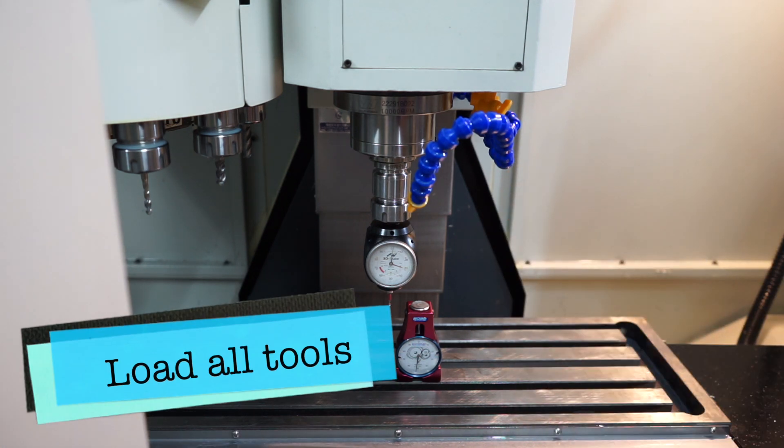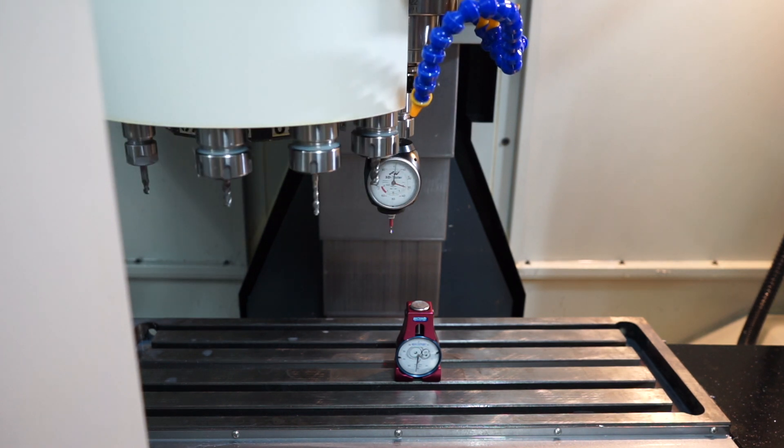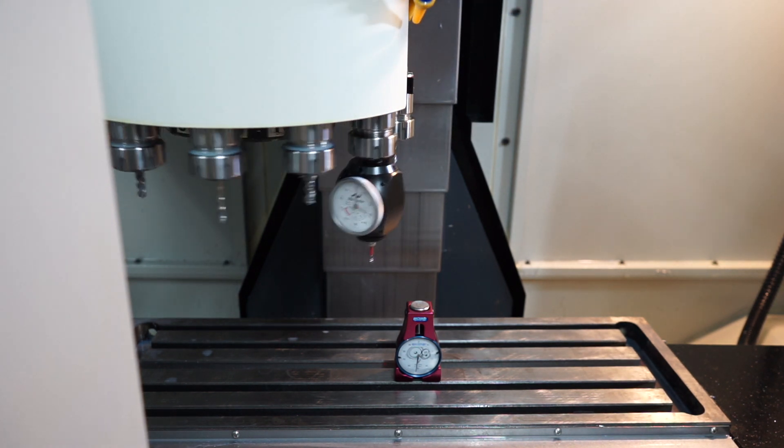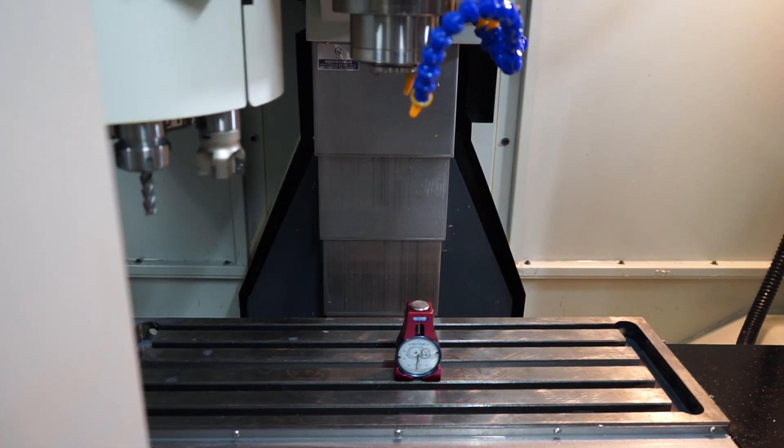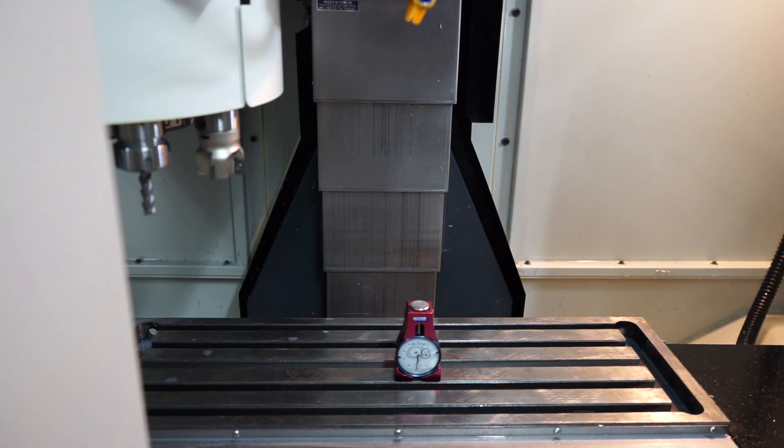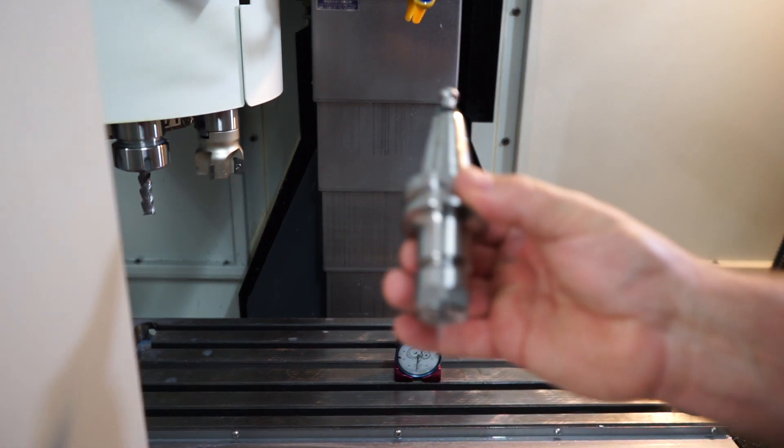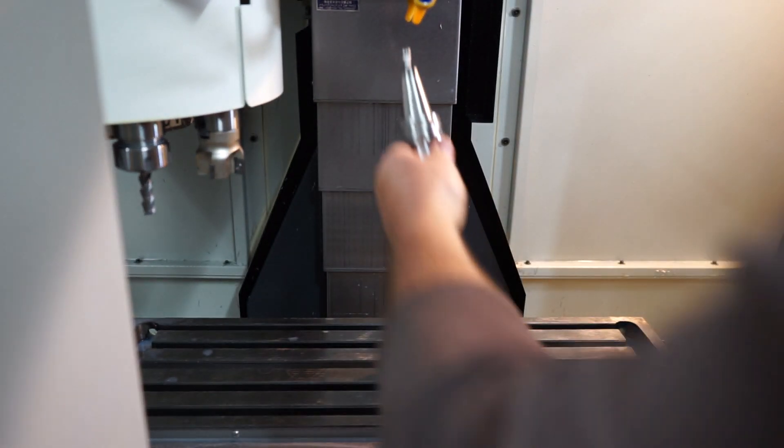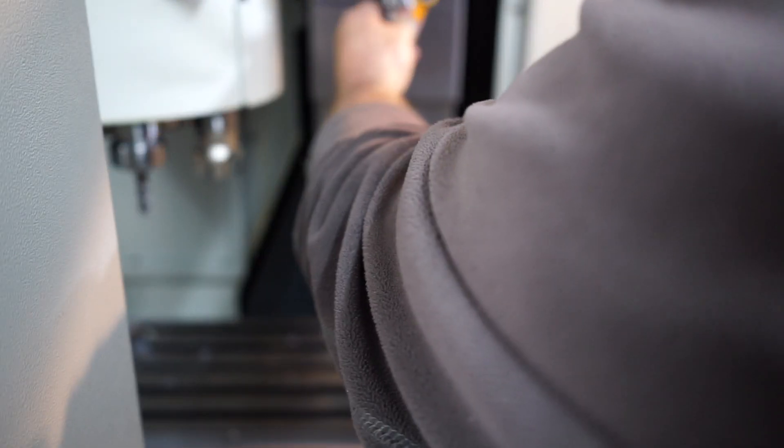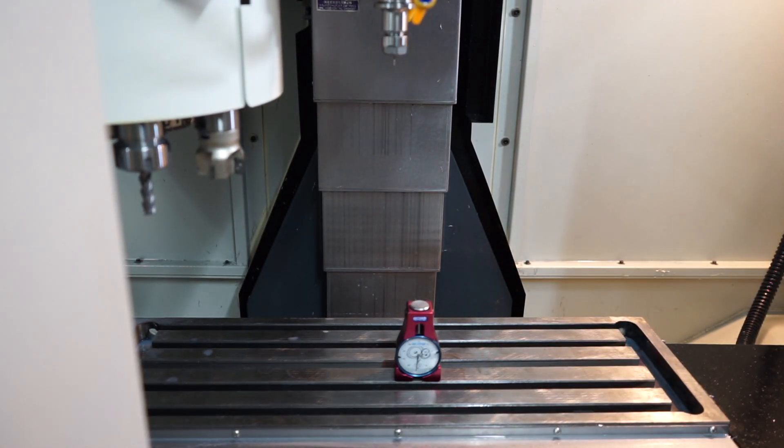Always remember to check your setup sheet and make sure you're putting the right tool in the right spot. And this is tool number two and it's the two mill end mill. I can now jog that down and set the tool height.